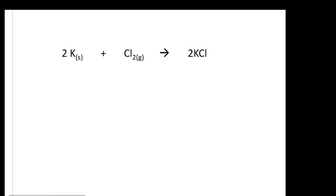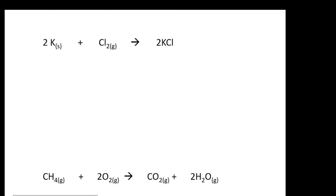Let's do some more practice so you can identify who is undergoing LoRa and who is undergoing GROC. Look at this: 2 potassium plus Cl2 becomes 2 KCl. What is the oxidation number of potassium? Zero, because it's in its natural existing state. How about Cl2? Zero. For KCl, overall it is zero, but now you want to break it down to see the oxidation number of each individual atom.